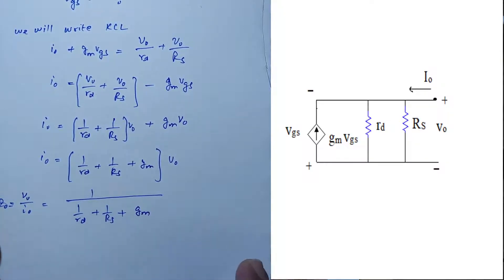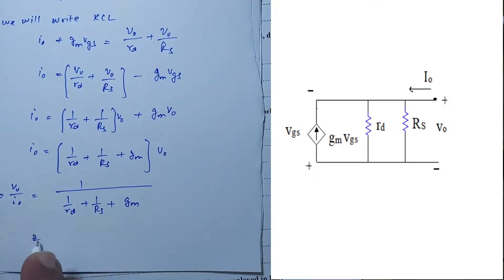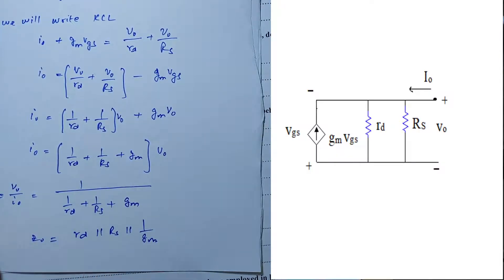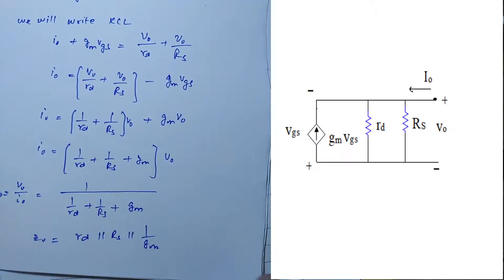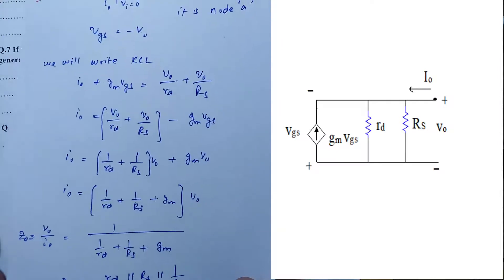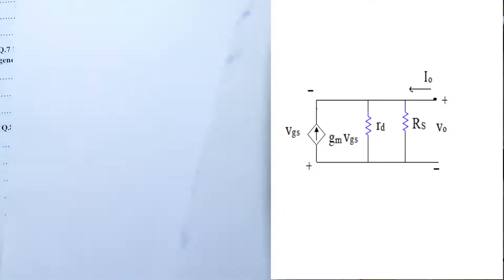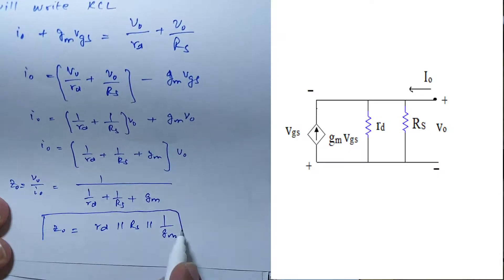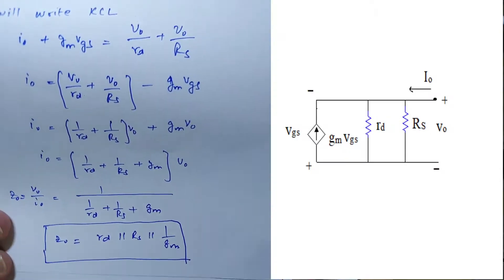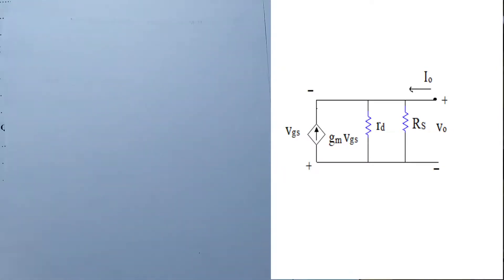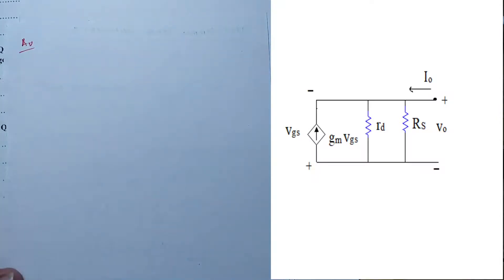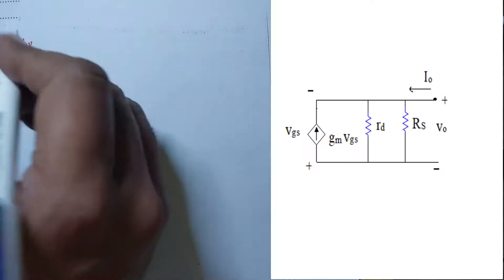After manipulation, the output impedance expression becomes: Rd in parallel with Rs in parallel with 1/gm. If we apply approximations for small Rd, we get a further simplified version. So the output impedance has a clean simplified form in terms of these three parallel resistances.